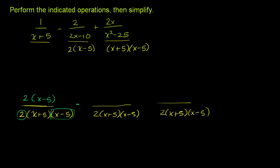Now we're subtracting over here. To get from 2 times x minus 5 to this common denominator, we had to multiply it by x plus 5. So we multiply the numerator by x plus 5 as well, giving us 2 times x plus 5. Then for the last expression, we went from x plus 5 times x minus 5 to 2 times x plus 5 times x minus 5, so we just had to multiply by 2.